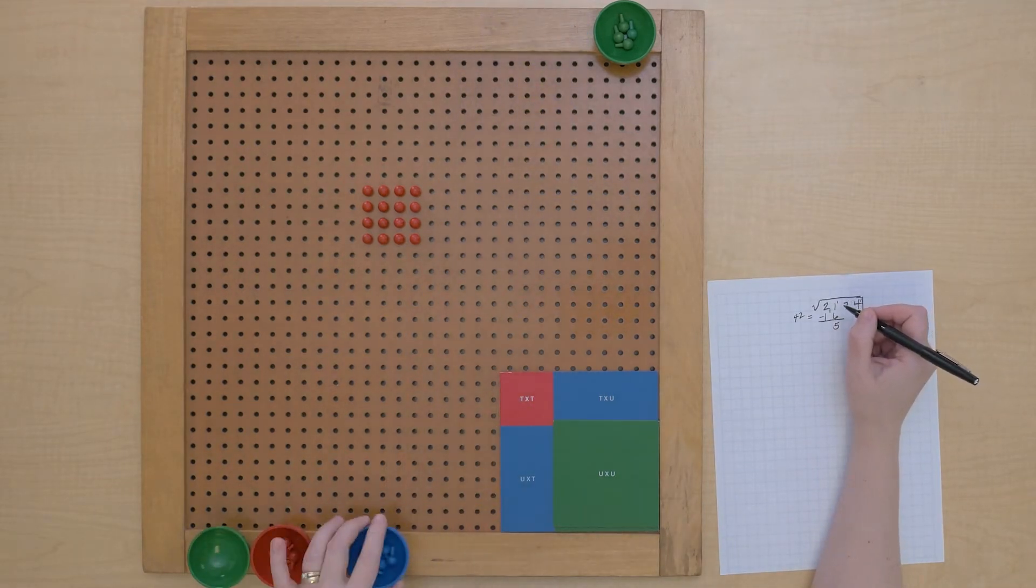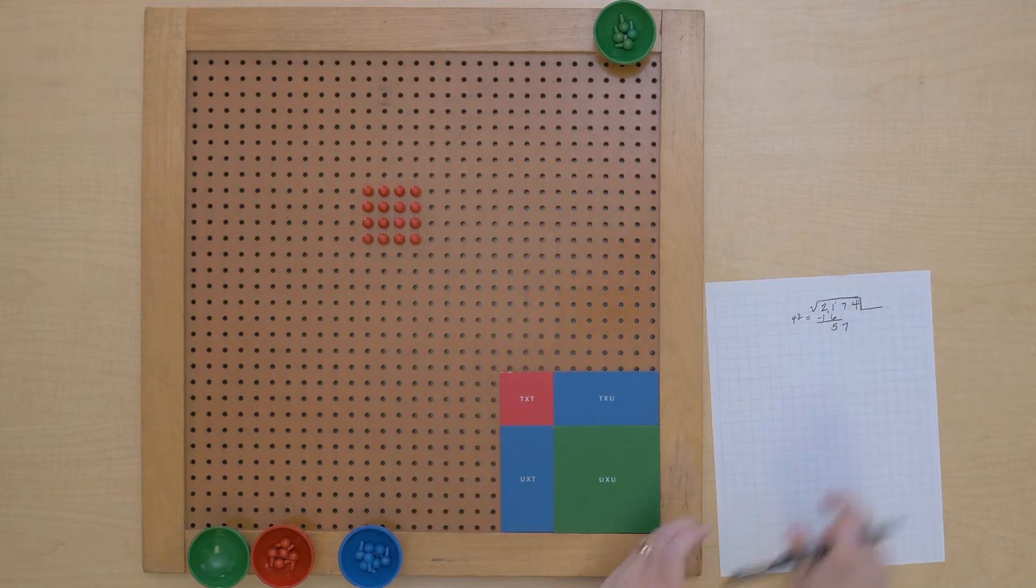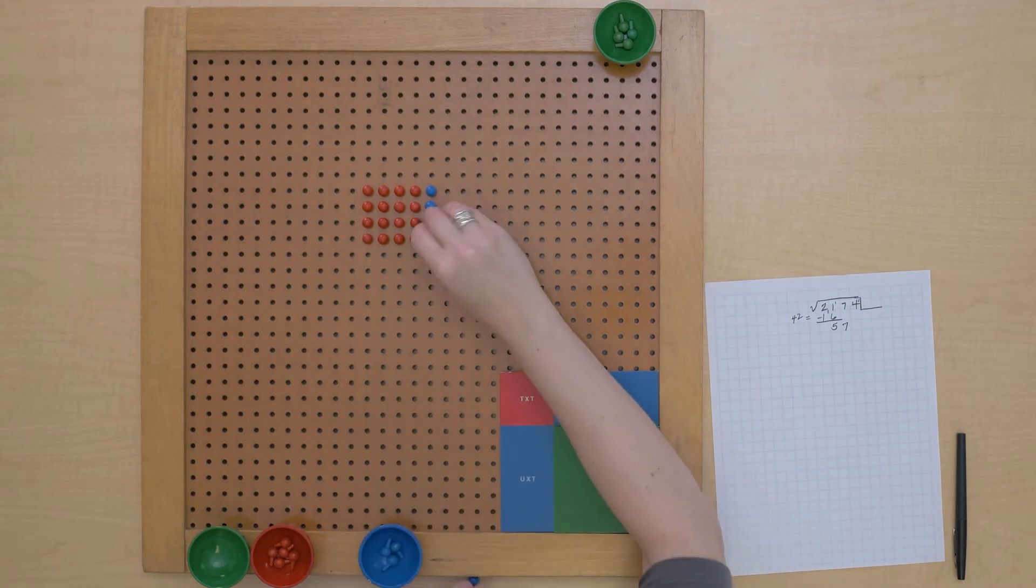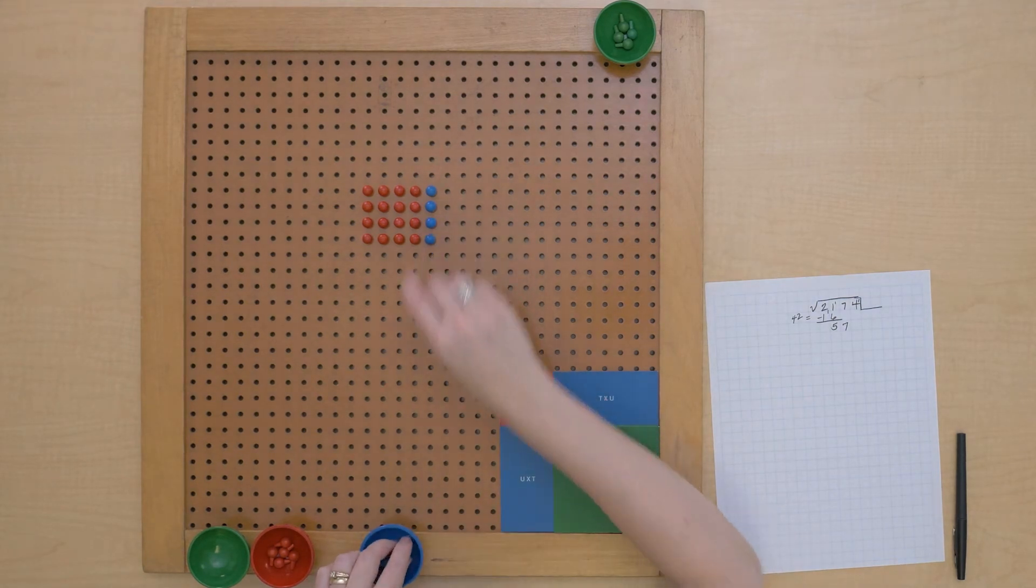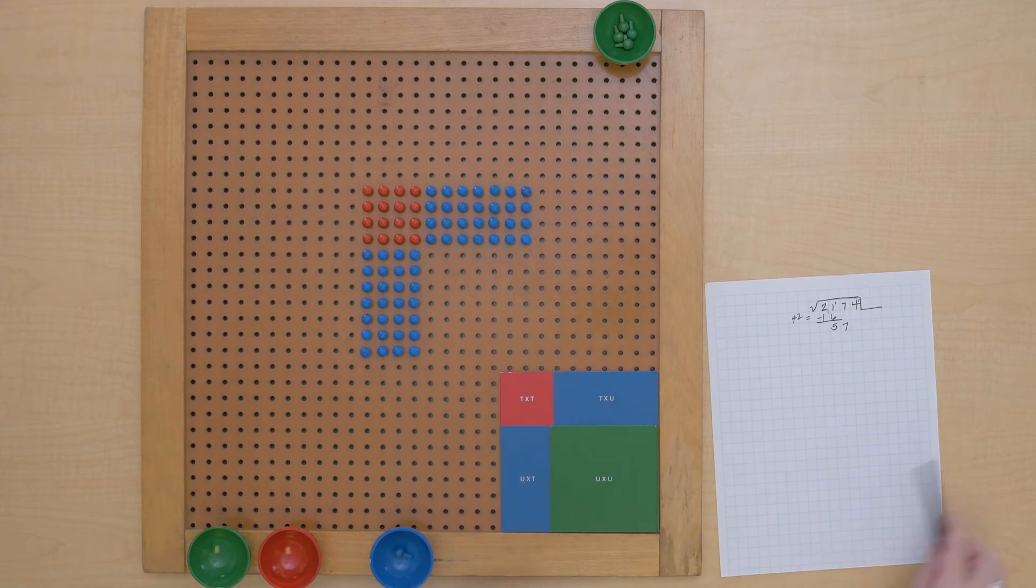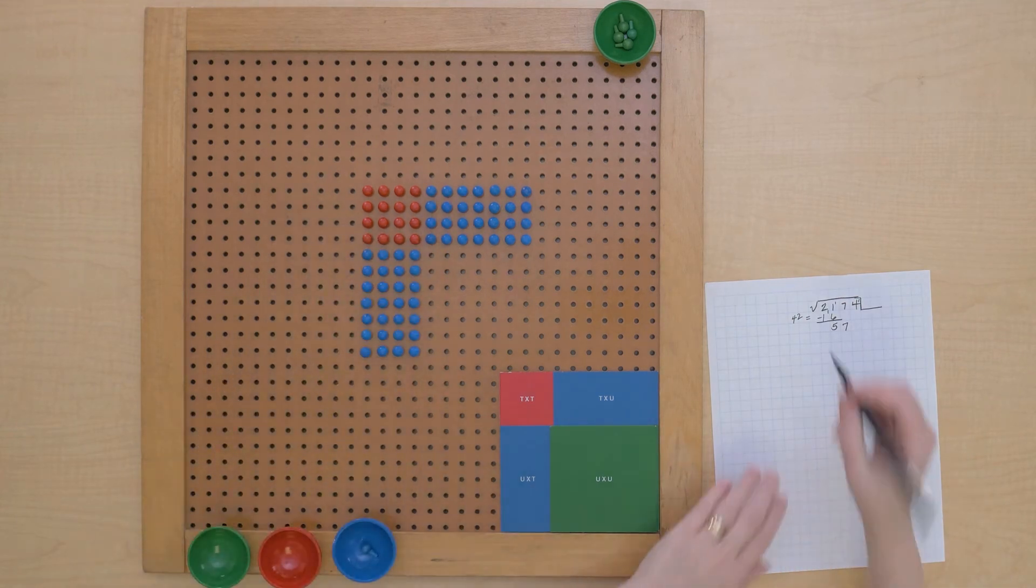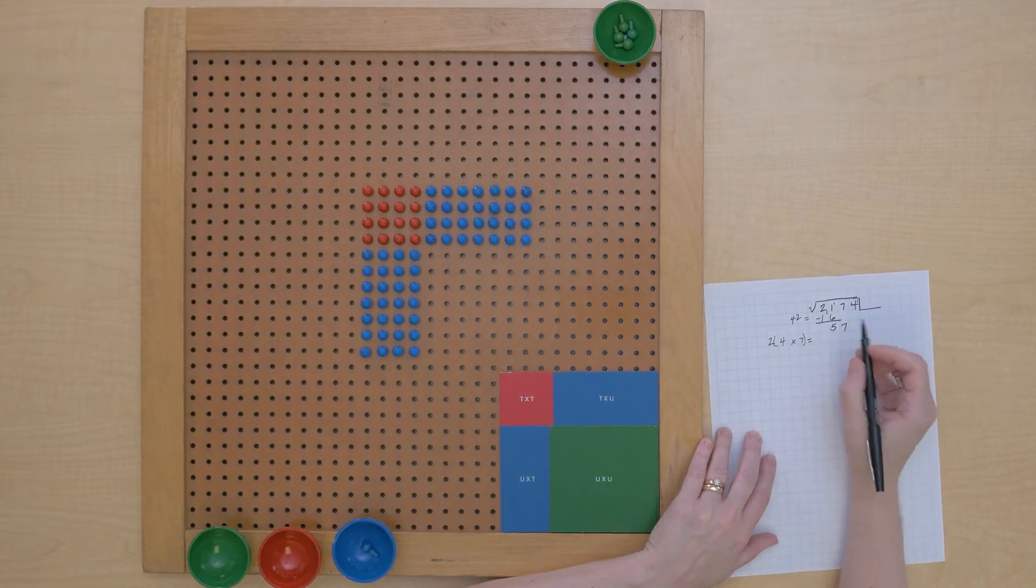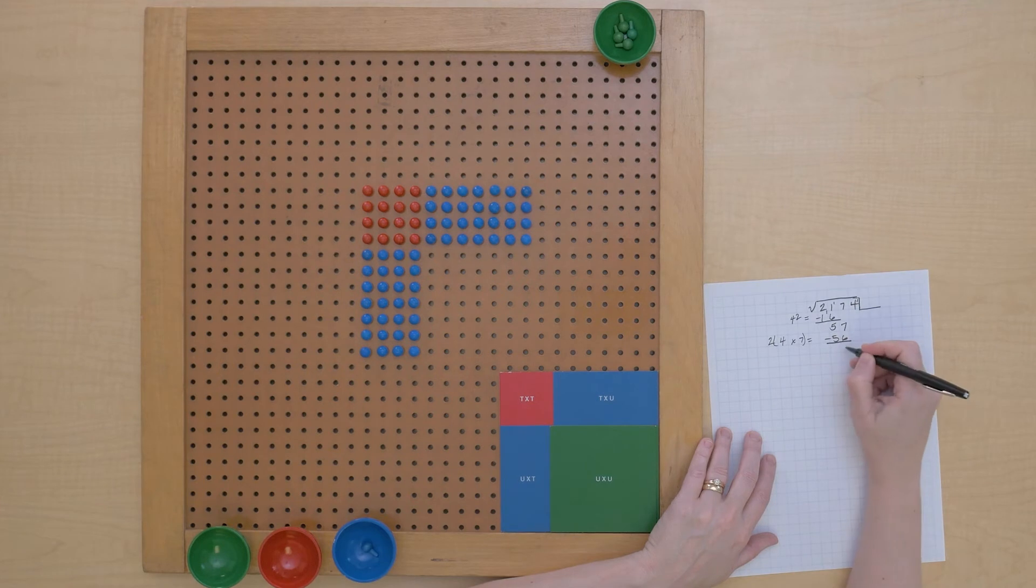Let's bring down our tens. We have two rectangles to build with 57 tens. All right. We built those two rectangles of 4 times 7, which equals 56. We had 57 and used 56.